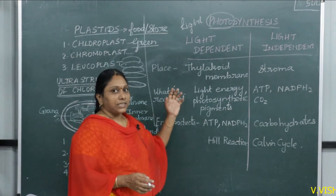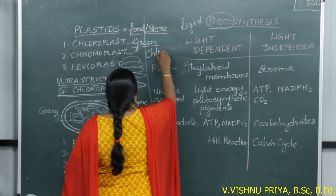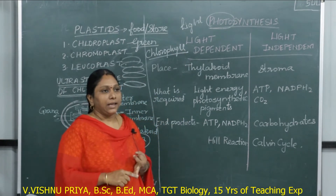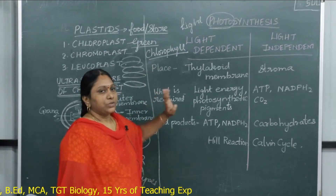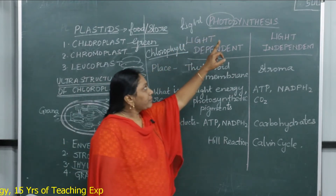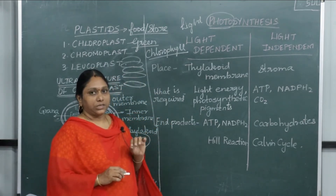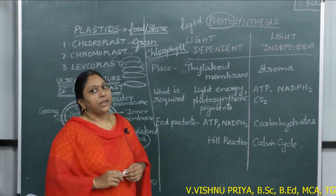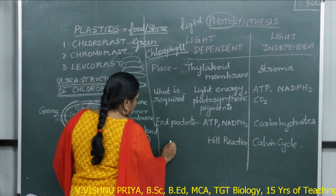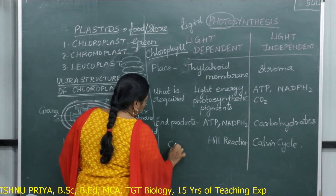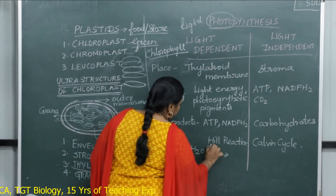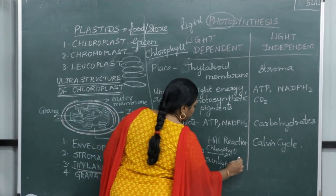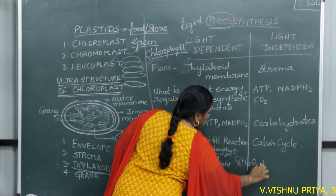The trapping of solar energy is done by the green pigment called chlorophyll. Green plants, some algae, and photosynthetic bacteria have this chlorophyll, so they absorb light and convert it into chemical energy. The simple equation for photosynthesis is: carbon dioxide plus water, in the presence of chlorophyll and sunlight, is converted into carbohydrates — glucose (C₆H₁₂O₆) — plus oxygen as a byproduct.